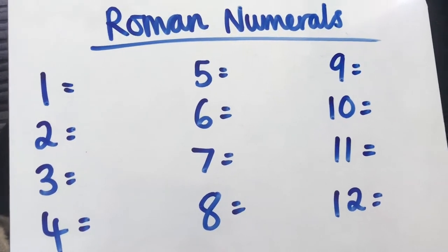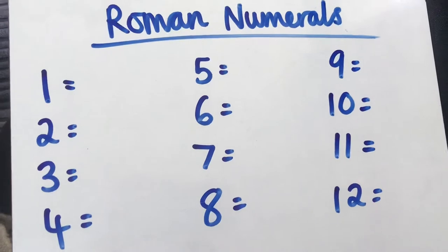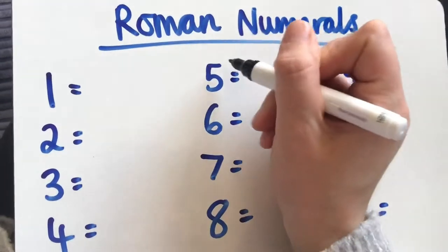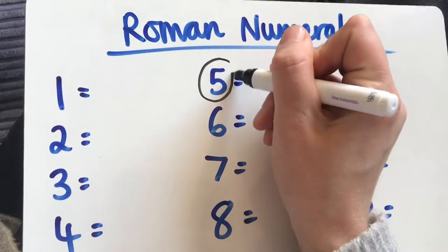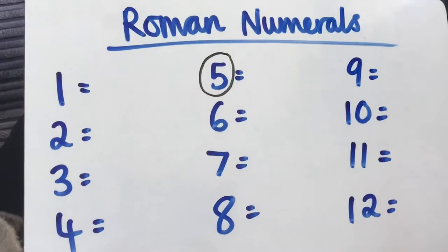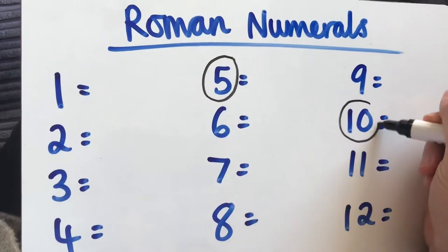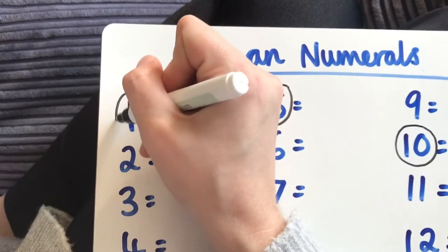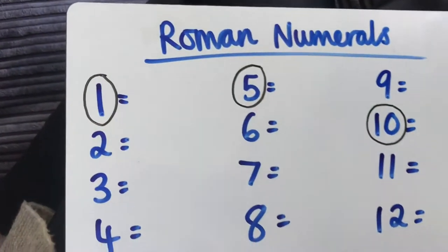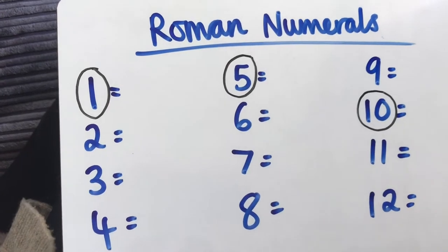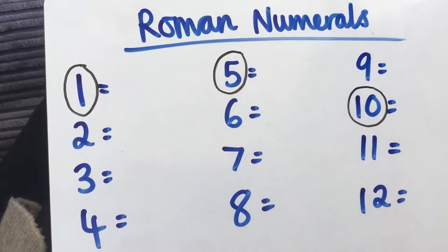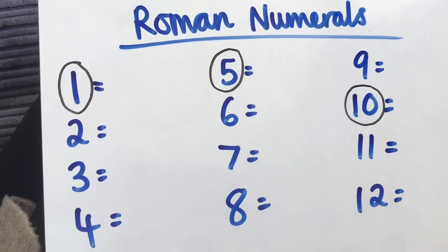There are three symbols that I'm going to start off with and we're going to learn three different symbols today. We're going to learn what the number 5 is in Roman numerals, what the number 10 is, and what the number 1 is, and then all the other numbers will fit around those three numbers. These are our key numbers.